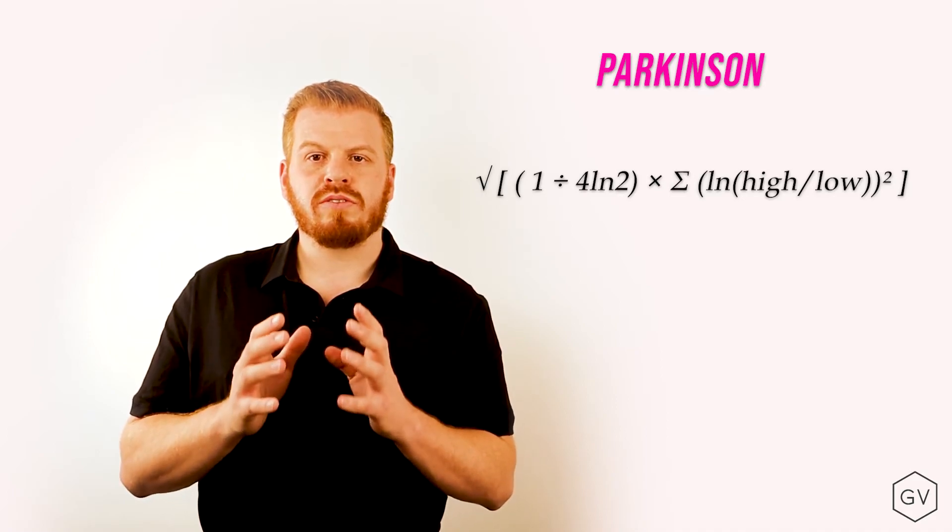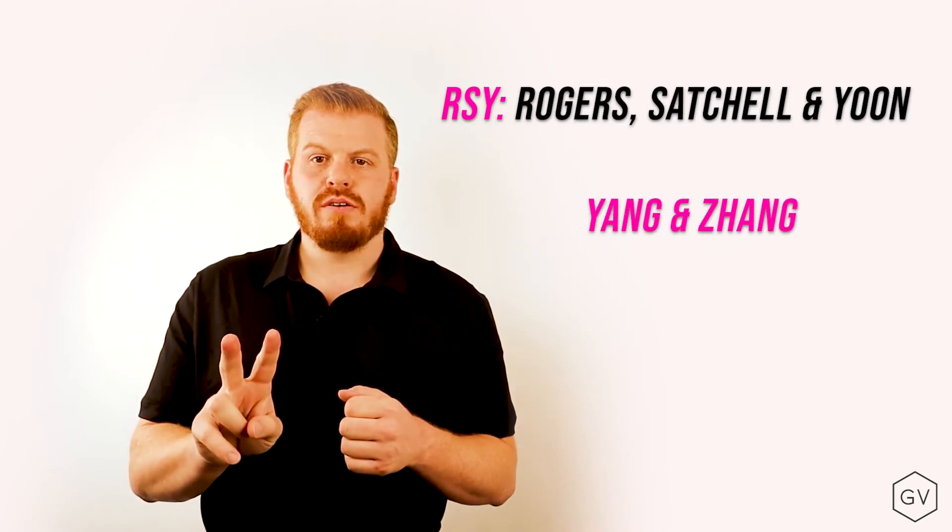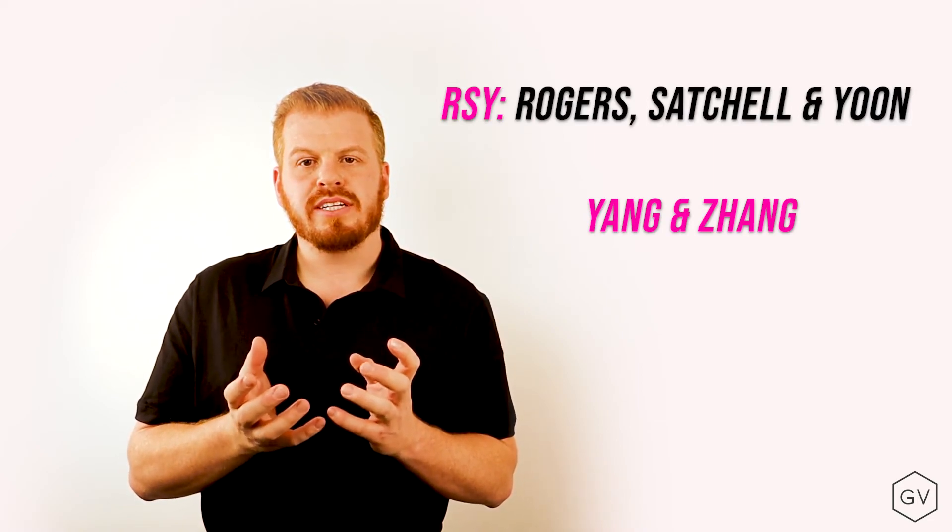Some other common historical volatility calculation methods are the RSY method and the Yang and Zhang method. Those two methods can be thought of as a blend between the Parkinson and the close-to-close method as an attempt to capture the properties of the Parkinson for non-continuous markets.